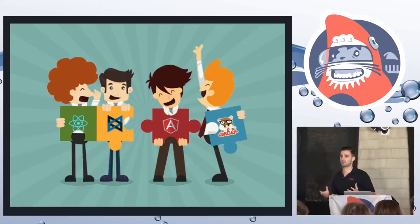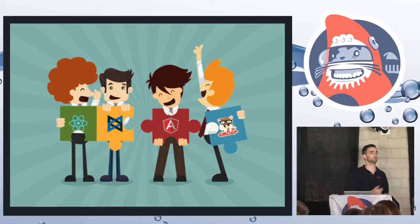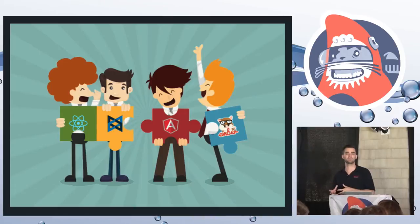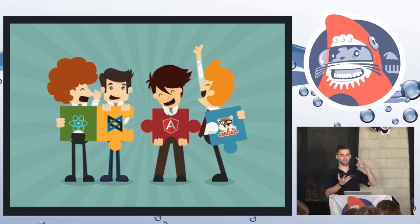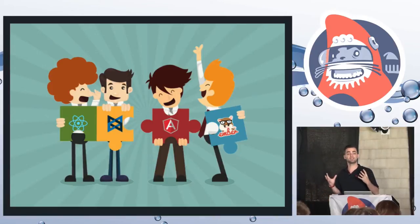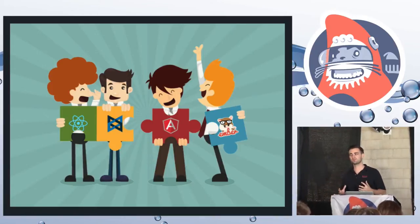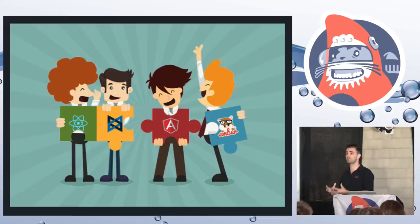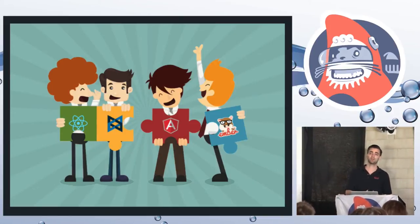How many times have you needed a multi-select combo box, or a table that does sorting, and you go out and find all these results — but they're written in Angular, they're written in React, they're written as a jQuery plugin — so you'll have to wire up all the bindings yourself. In my opinion, it's kind of crazy we've gotten into this situation where our view layer is so tightly coupled to the rest of our application framework.